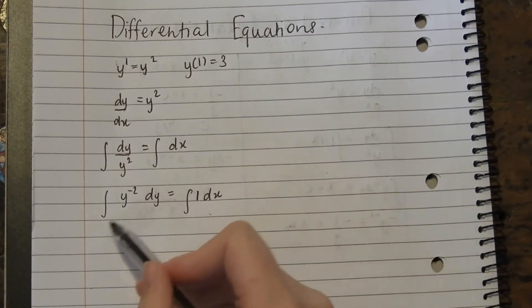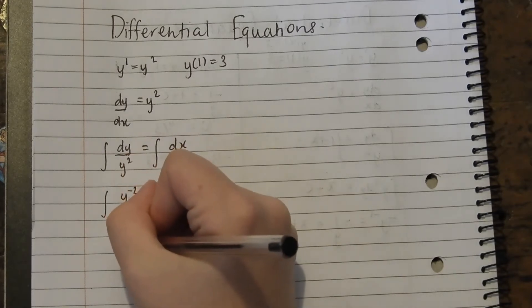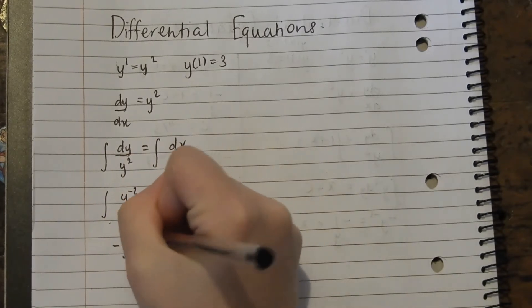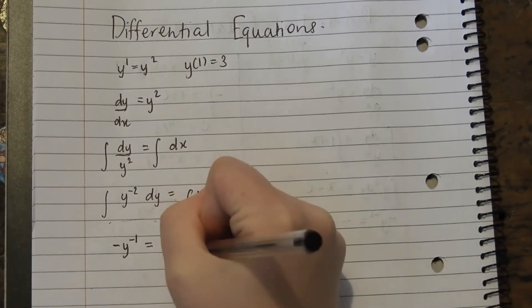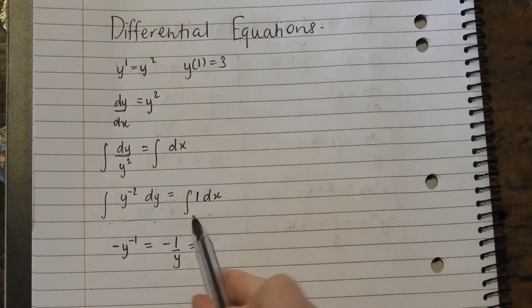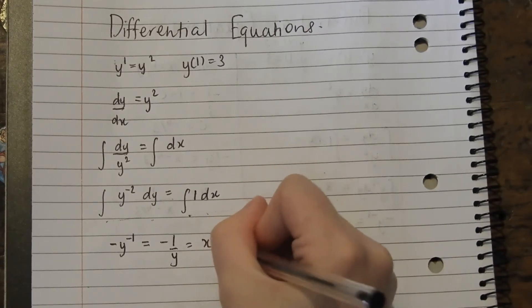So this integral is the same as negative y to the negative 1, which is the same as negative 1 on y. And this integral is x plus c.